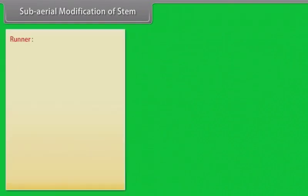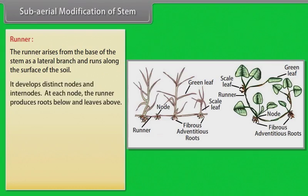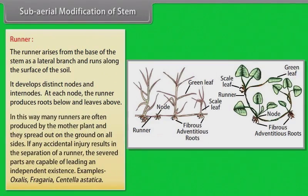The runner rises from the base of the stem as a lateral branch and runs along the surface of the soil. It develops distinct nodes and internodes. At each node, the runner produces roots below and leaves above. Many runners are often produced by the mother plant and they spread out on the ground on all sides. If any accidental injury results in the separation of a runner, the severed parts are capable of leading an independent existence. Examples: Oxalis, Fragaria, Centella asiatica.